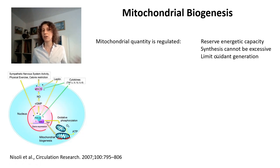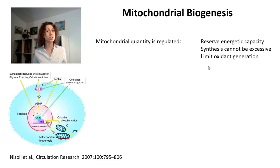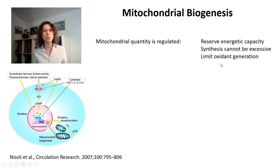However, mitochondria are not cheap to make. Synthesis has to be controlled because it can't be excessive. Mitochondria are very complex for the cell, and having too many would be a waste of energy. Too many mitochondria would also generate a lot of reactive oxygen species, a lot of free radicals. So you want to limit the quantity of oxidants generated, making mitochondrial biogenesis a regulated process.